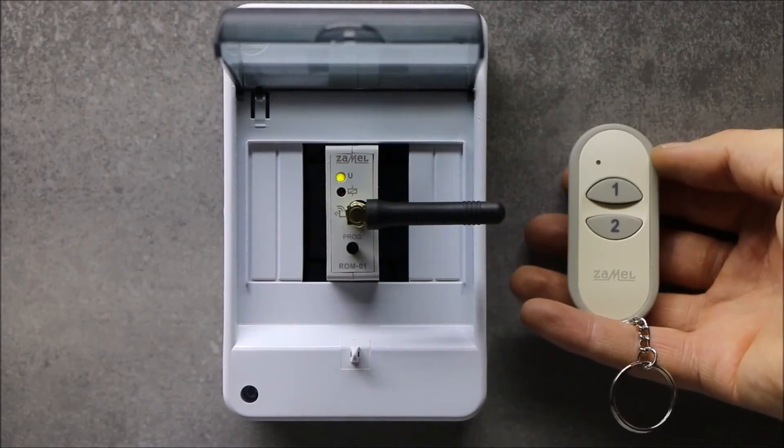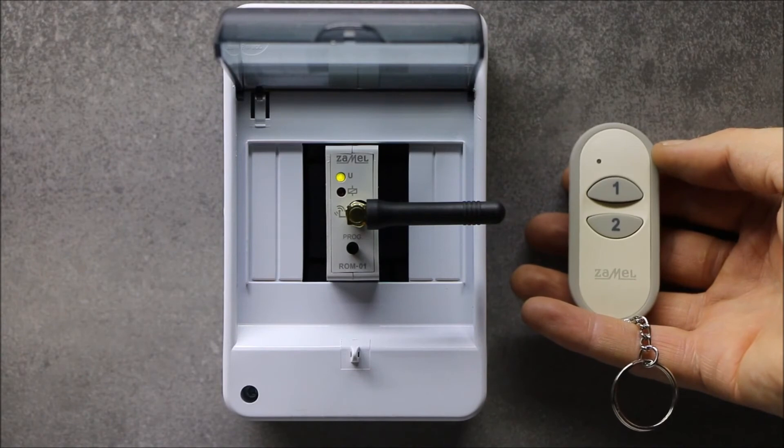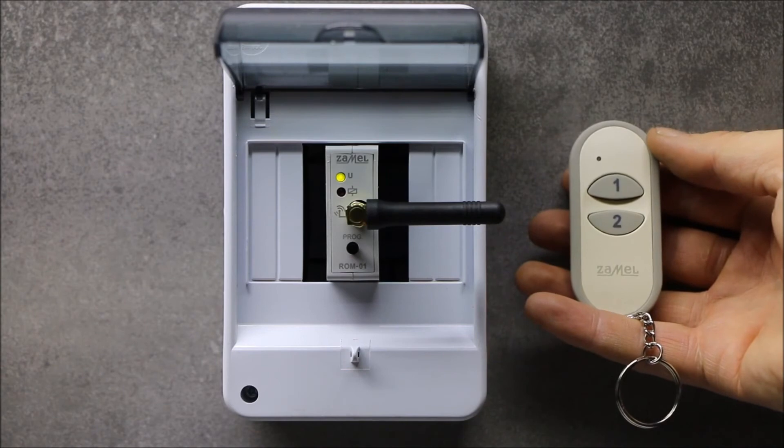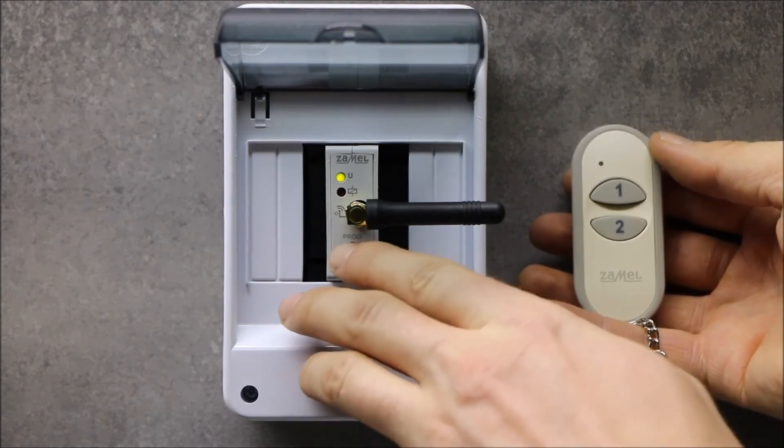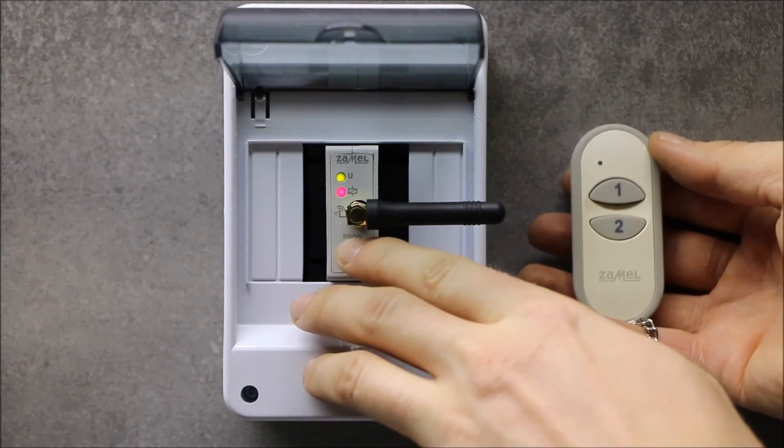In order to program the bi-stable mode, press the PROC button to begin the programming procedure. Once the status LED lights up, press the selected transmitter button.